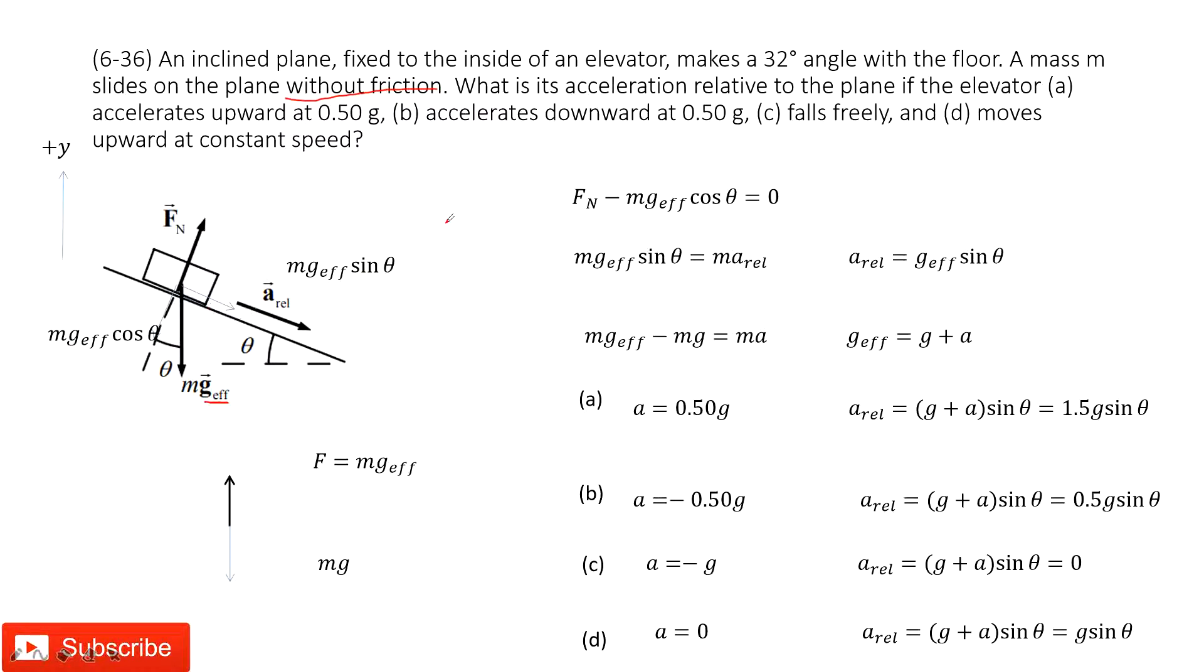Now, we do force analysis. We consider Newton's second law. We look at the vertical direction. The force is balanced. So, we have the normal force minus mg effective cosine theta equals zero. Then, look at the direction along the slope. The net force is mg effective sine theta equals the mass times acceleration relative.